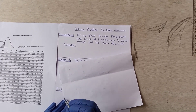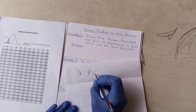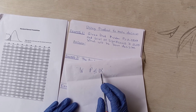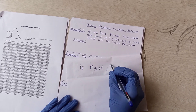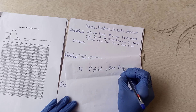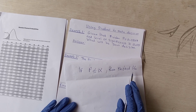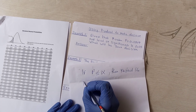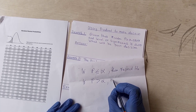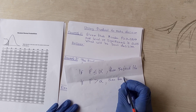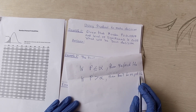When you compare them, if the p-value is less than or equal to alpha — alpha is the level of significance — then you reject H₀, which is the null hypothesis. But if the p-value is greater than alpha, then you fail to reject the null hypothesis H₀.